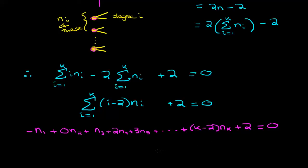Since we can ignore this 0 times n_2, we can easily solve for n_1 and we get exactly the equation that we were trying to prove. So this completes our proof.